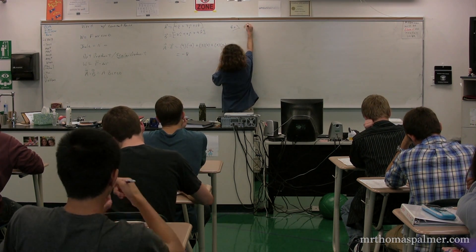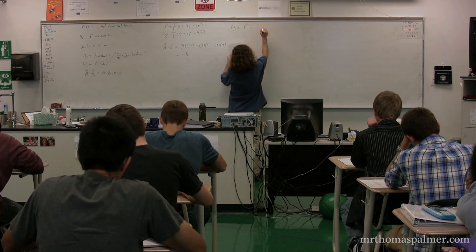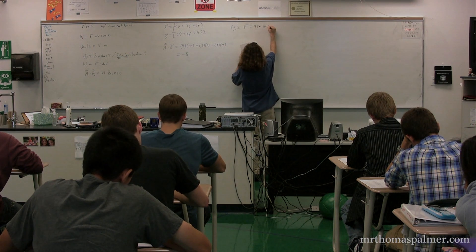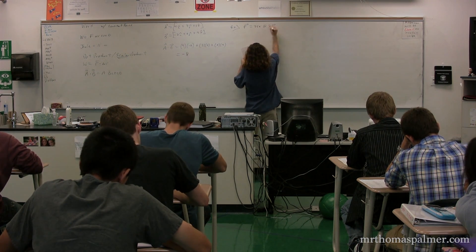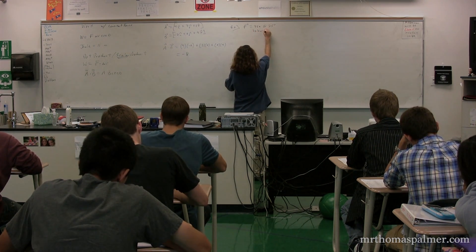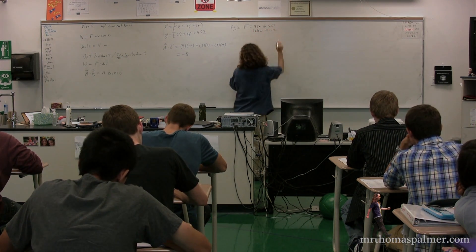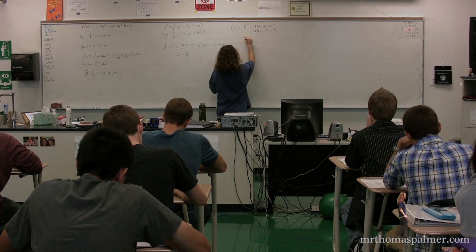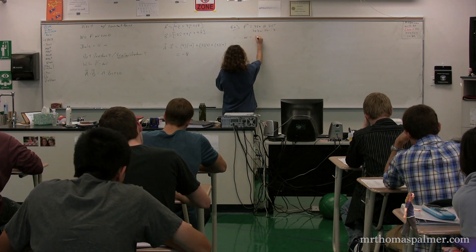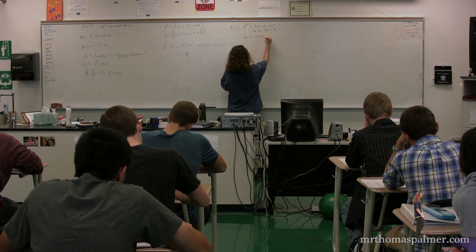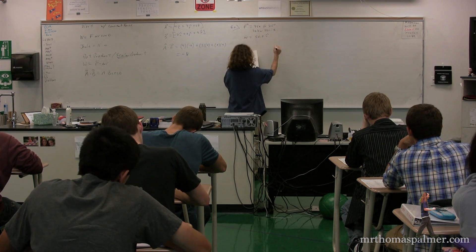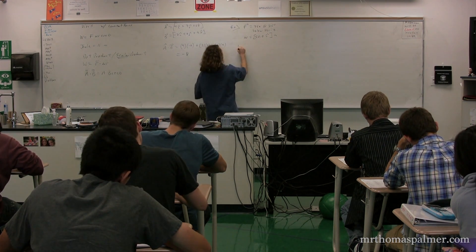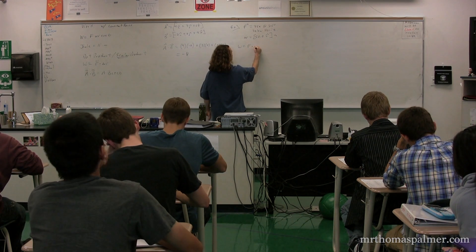Let's say we have a force equal to 35 newtons at an angle of 25 degrees below the horizontal. The displacement of the object is 50.05 meters. We're trying to figure out the work done by this constant force.